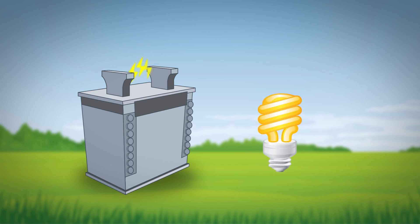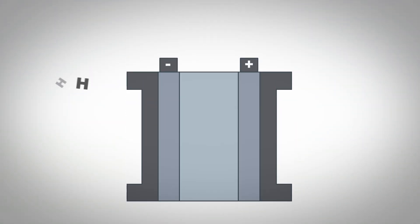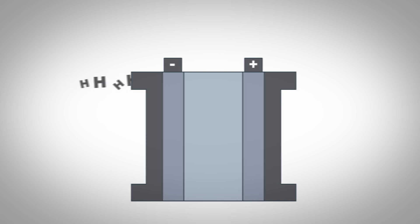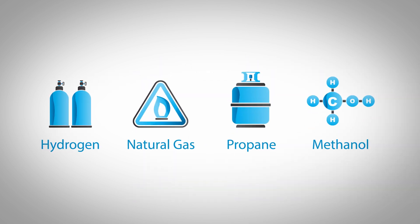Fuel cells can produce electricity continually for as long as the fuel lasts. Most of the fuel cells in use today are powered by hydrogen, but other fuels are sometimes used.